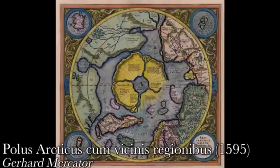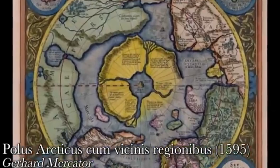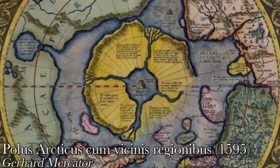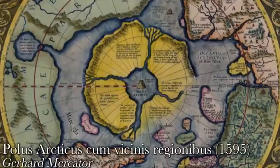This map from 1595, by Gerhard Mercator, gives us a close-up of this system. In small letters it reads 'Rupes Nigra et Altissima' — the black and very high rock — at the center. There is a mountain range surrounding each island continent, which in one of Mercator's letters he described as being 14 miles wide.